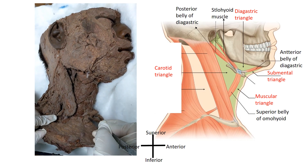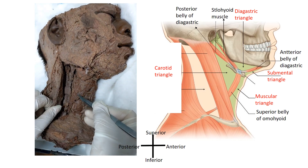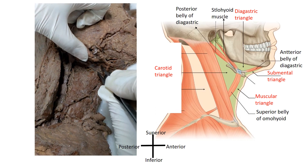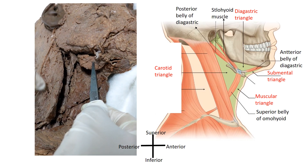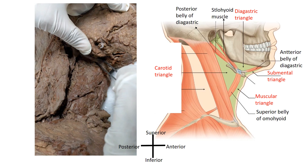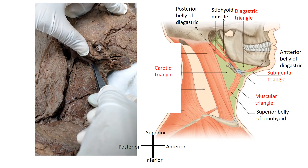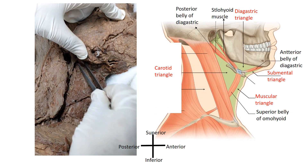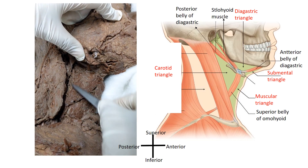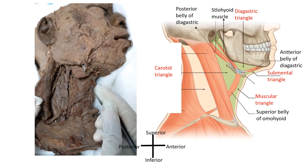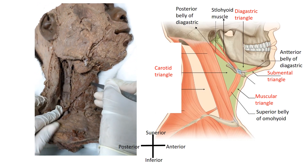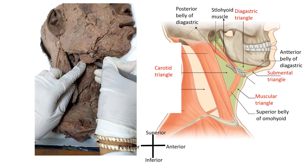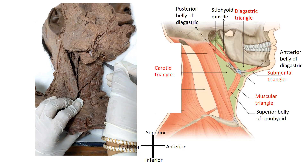The anterior triangle is divided into three and a half triangles by the superior belly of the omohyoid muscle and the anterior and posterior bellies of the digastric muscle. You can see the submandibular gland here. The anterior and posterior bellies of the digastric muscle and the superior belly of the omohyoid divide the anterior triangle into: the muscular triangle, the carotid triangle, the digastric triangle, and the submental triangle as the half triangle.